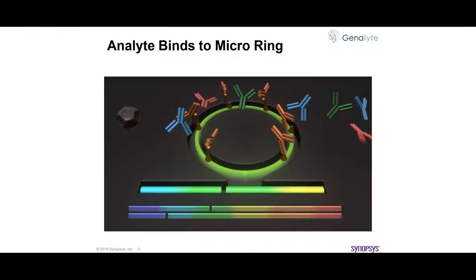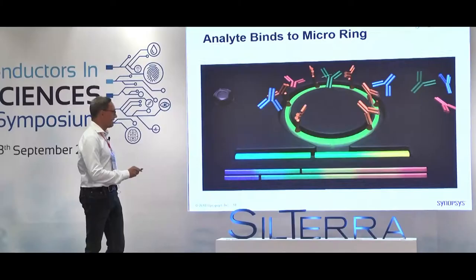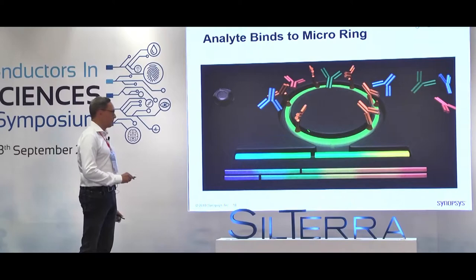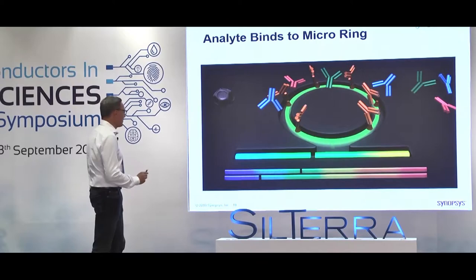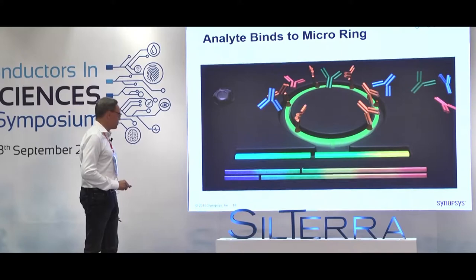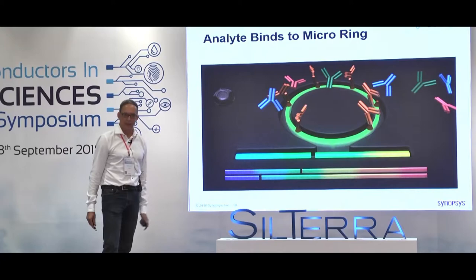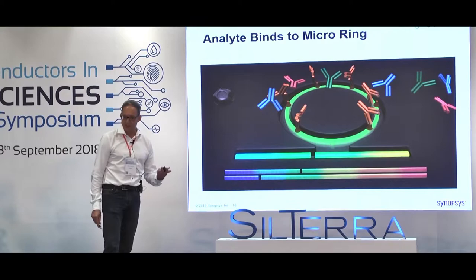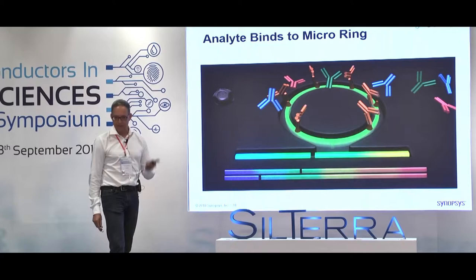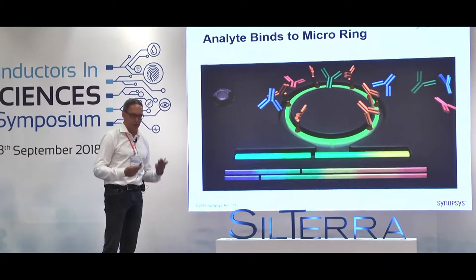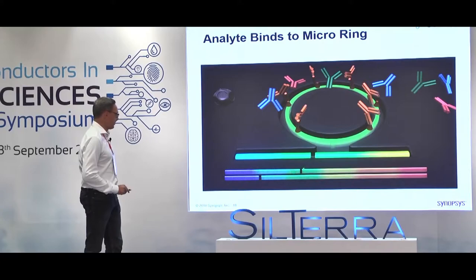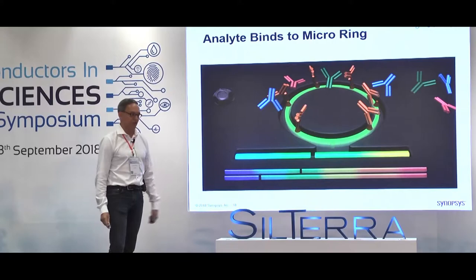If you look at the end of the straight channel and analyze the spectrum, you will see a notch — you're missing the light there, and that's your resonance wavelength of the ring. Now you start flowing the microfluidic channel across it. The channel has all the analytes in the fluid. This ring is functionalized for specific analytes. It's like organ pipes in a church: if you spray paint them, the tone changes. The analytes bind to the ring, adding mass, and the frequency of the light changes — so you see your notch shifting.